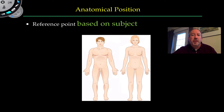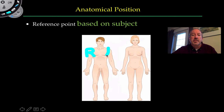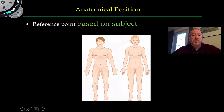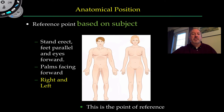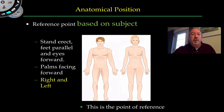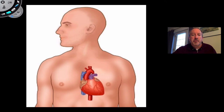The most important thing about anatomical position is that it's based on the patient — the subject, not you. So this is the patient's right side and this is the patient's left side. In anatomical position, you're standing up, facing forward, eyes facing forward, palms facing downward, and from that you can determine right and left based on the subject.